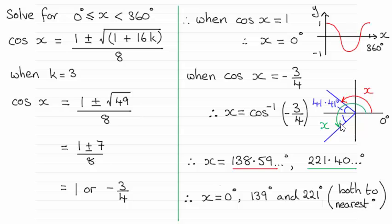Now when you take the inverse cosine of minus 3 quarters, providing you're in degrees mode, you will get 138.59 and so on degrees. So that's this red angle x here.